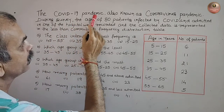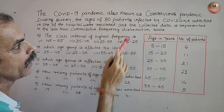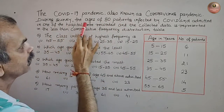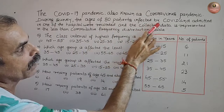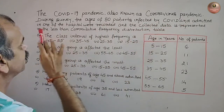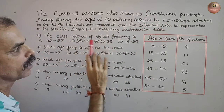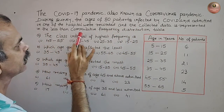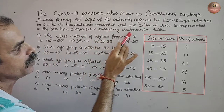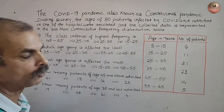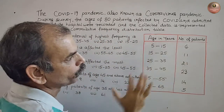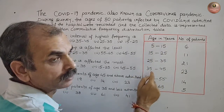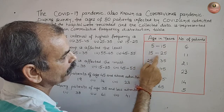The COVID-19 pandemic, also known as the coronavirus pandemic. During a survey, the ages of 80 patients infected by COVID and admitted in one hospital were recorded, and the collected data is represented in a less-than cumulative frequency distribution table. This is the table: age in years — 5 to 15, 15 to 25, 25 to 35, 35 to 45, 45 to 55, 55 to 65.